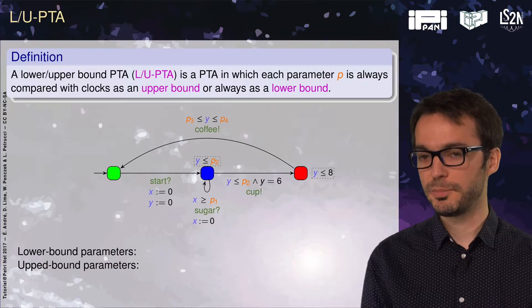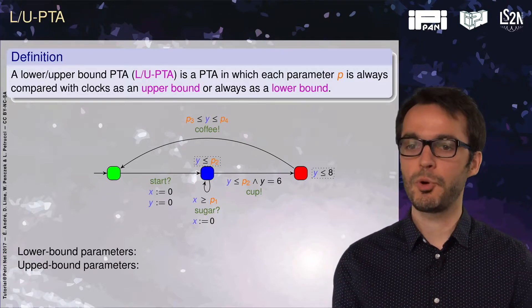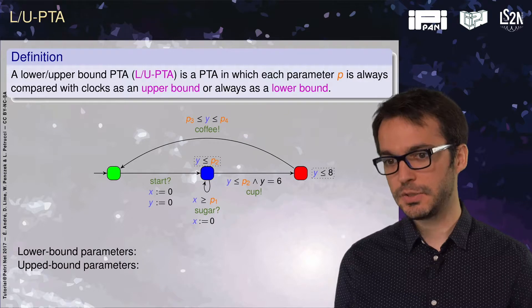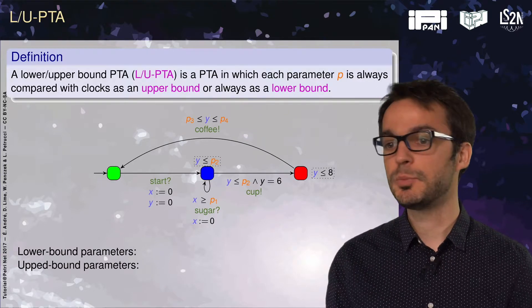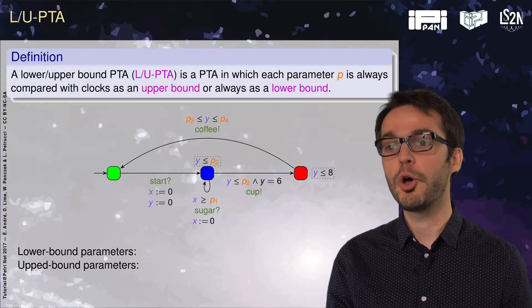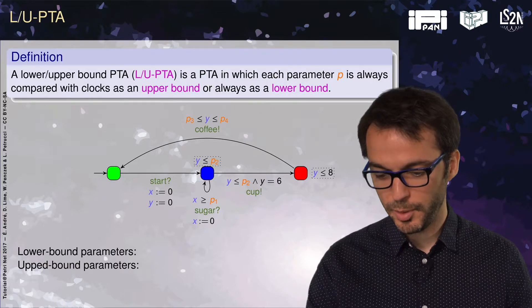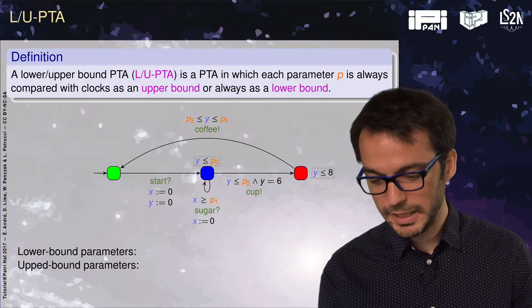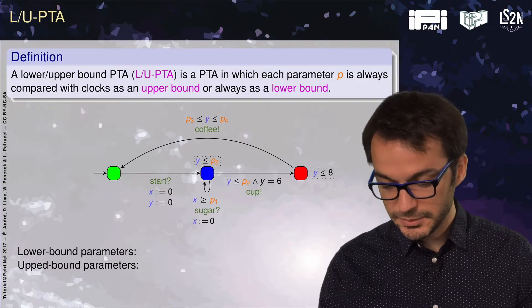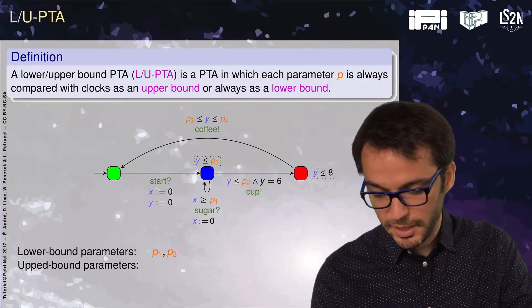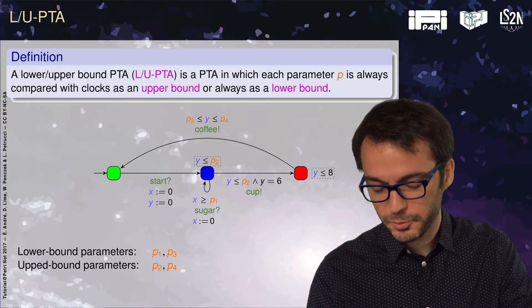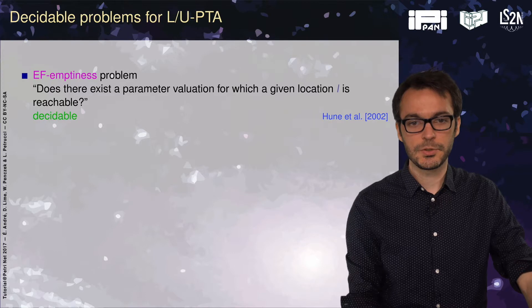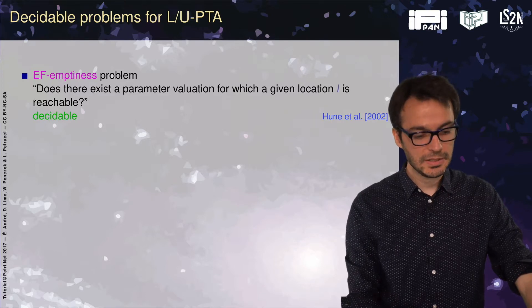Let us move now to lower/upper bound parametric timed automata (LUPTA). Since the general framework of parametric timed automata is highly undecidable, there have been syntactic restrictions on the use of parameters to recover decidability. An LUPTA is a parametric timed automaton in which each parameter P is either an upper bound parameter — always compared to a clock as an upper bound, like P4 being an upper bound of Y — or always a lower bound, like P1 being smaller than X. This PTA is an LUPTA with two lower bound parameters P1 and P3, and two upper bound parameters P2 and P4.